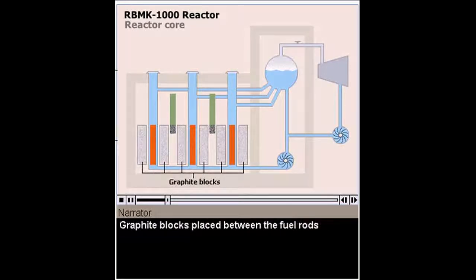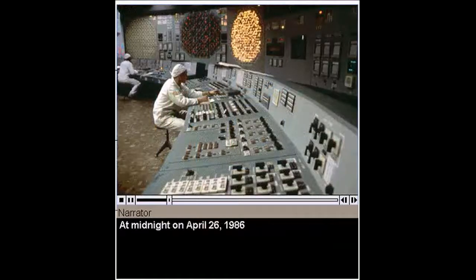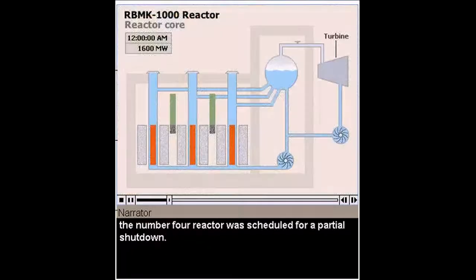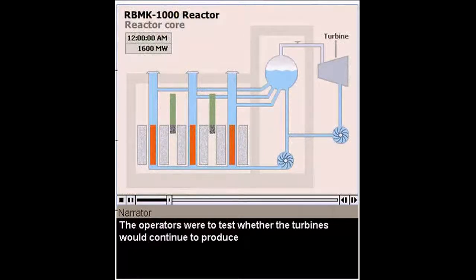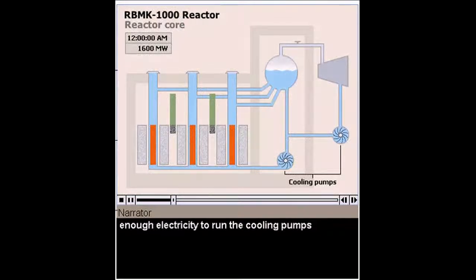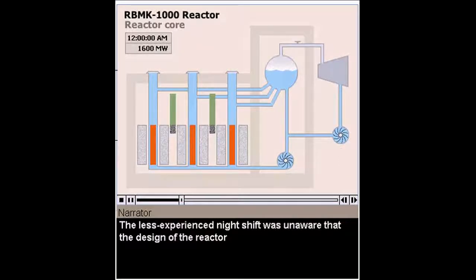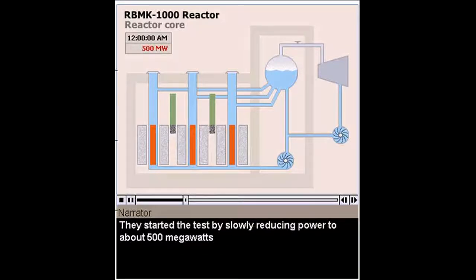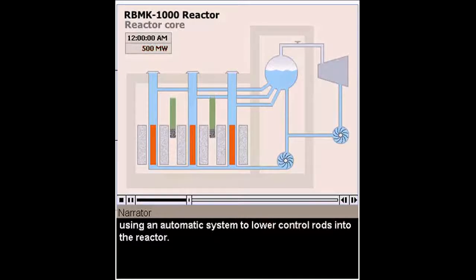Graphite blocks placed between the fuel rods were also used to moderate the nuclear reaction. At midnight on April 26, 1986, the No. 4 reactor was scheduled for a partial shutdown. The operators were to test whether the turbines would continue to produce enough electricity to run the cooling pumps and other emergency systems in the event of a loss of the main power supply. The less experienced night shift was unaware that the design of the reactor made it unstable and difficult to control below 700 megawatts. They started the test by slowly reducing power to about 500 megawatts using an automatic system to lower control rods into the reactor.